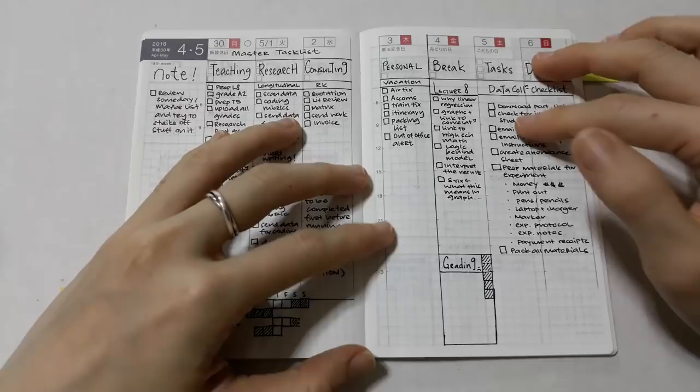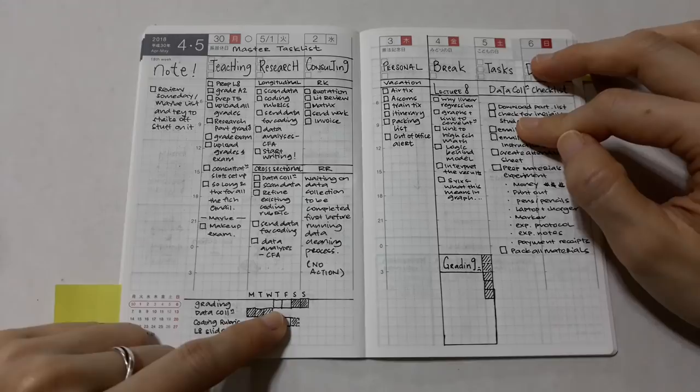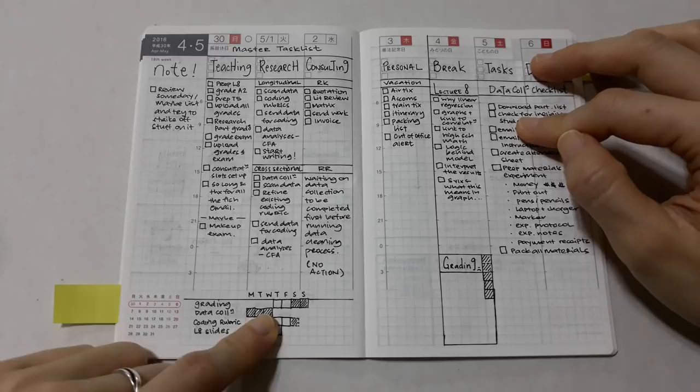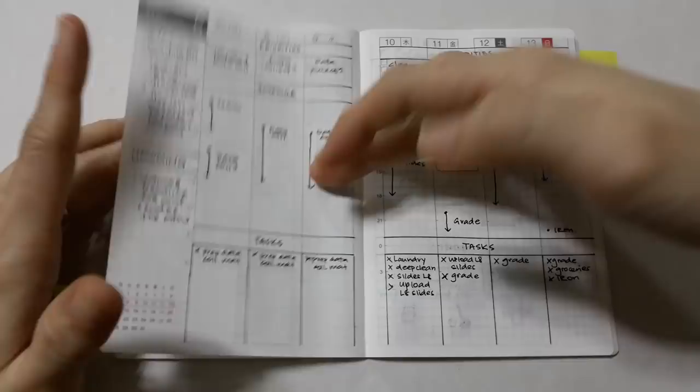At the bottom I plan what I want to do for the week. So I draw a box for each day I want to work on the task, and if I work on the task I shade the box, otherwise I leave it empty. For example, I wanted to grade on Thursday, Friday, Saturday, and Sunday, but really only managed to grade on Saturday and Sunday.